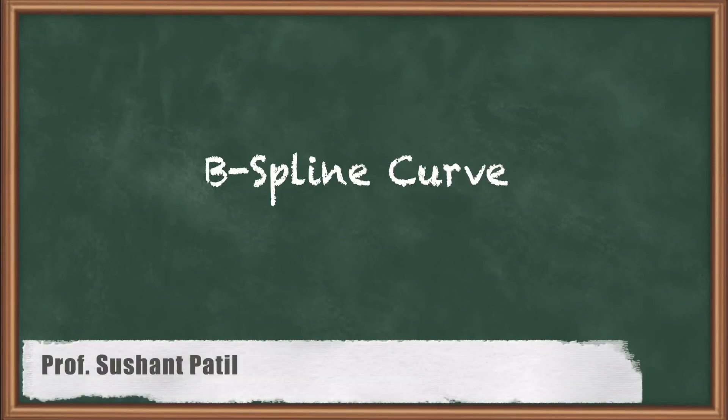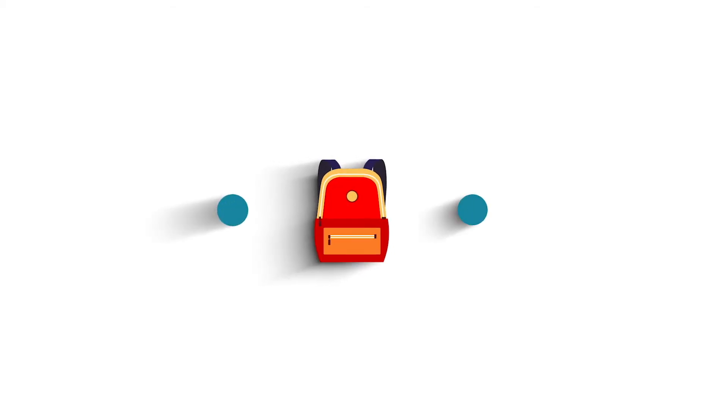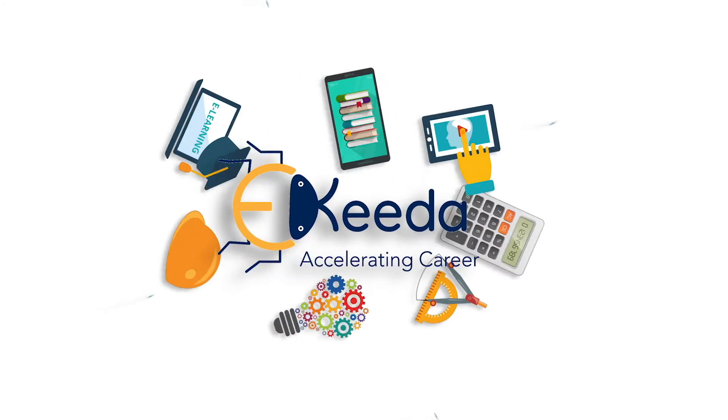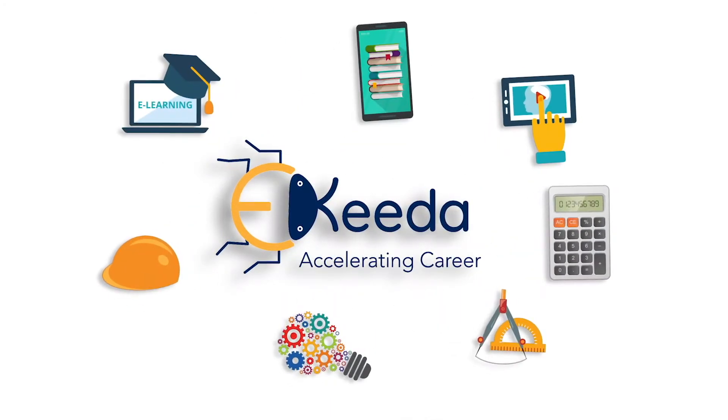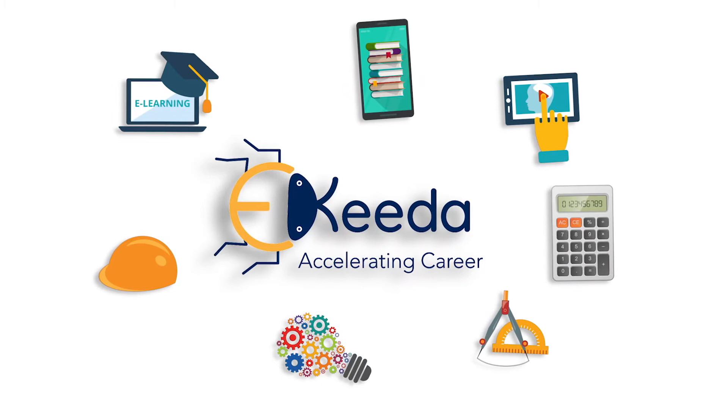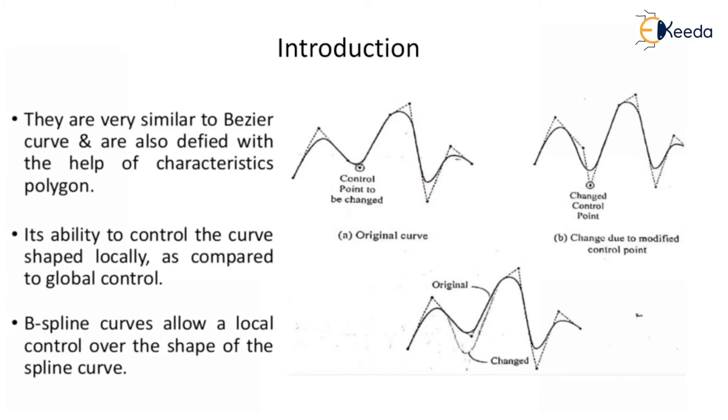Hello friends, let's begin with B-spline curves. It is similar to Bezier curve where it will help for the characteristic of polygon. Its ability to control the curve shaped locally, as compared to global control.